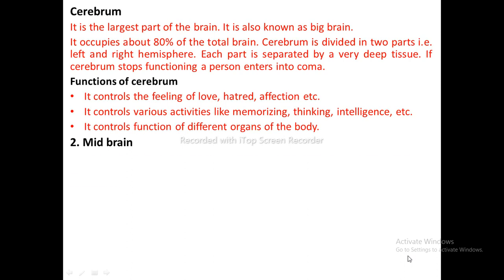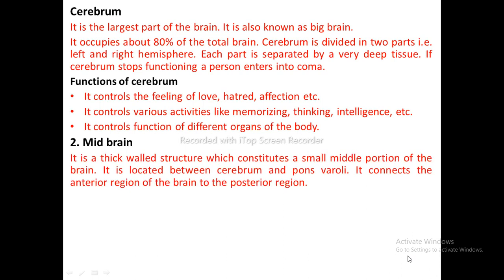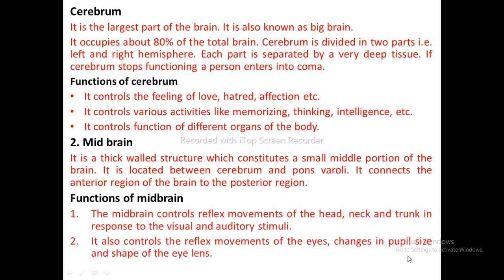Midbrain: It is a thick-walled structure which constitutes a small middle portion of the brain. It is located between the cerebrum and pons, and it connects the anterior region of the brain to the posterior region. Functions of midbrain: it controls reflex movement of the head, neck, and trunk in response to visual and auditory stimuli. It also controls reflex movement of the eyes, changes in pupil size, and shape of the lens.